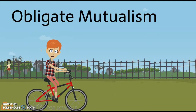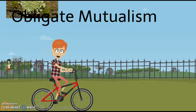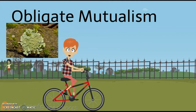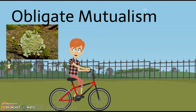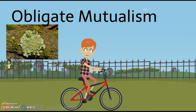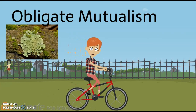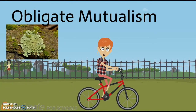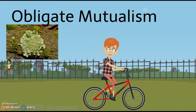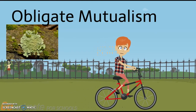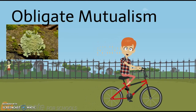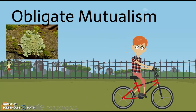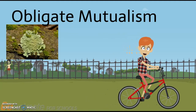The lichen in this example consists of part algae or blue-green algae and part fungus. The algae or blue-green algae are photosynthetic and produce food for the fungus. The fungus, then, protects the algae from the elements, providing a home for it of sorts, as well as providing water and minerals for the algae.